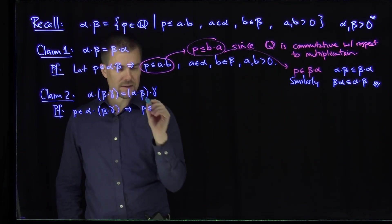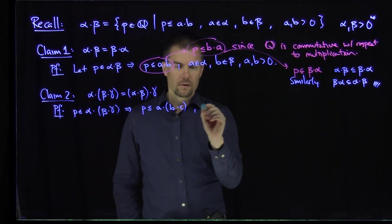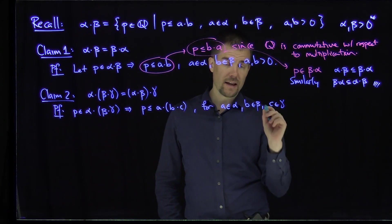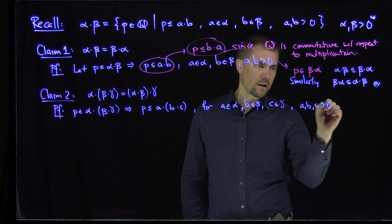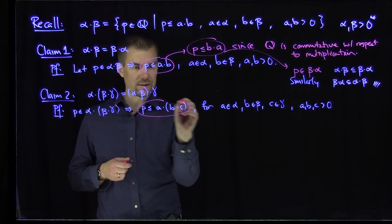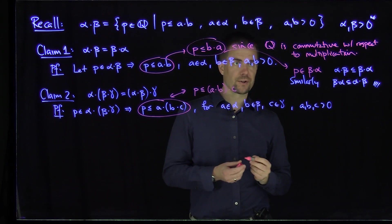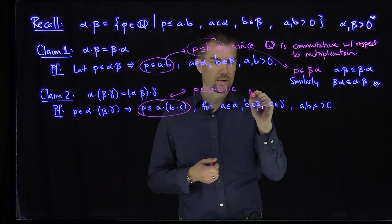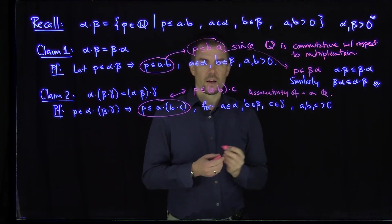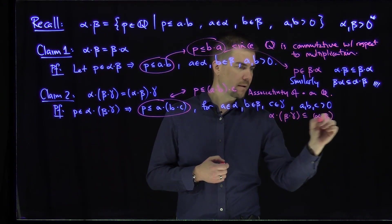This implies that p is less than or equal to a times something in this set, which is of the form b·c, for a in α, b in β, and c in γ, and they are all non-negative — a, b, and c are greater than zero. And so now I can associate on ℚ, since multiplication is associative on ℚ. I can take this condition and say it is exactly equivalent to p being less than or equal to a·b·c for the exact same conditions, since ℚ is associative. So I'm using associativity of the multiplication operation on ℚ. This allows me to conclude that (α·β)·γ is contained in α·(β·γ).